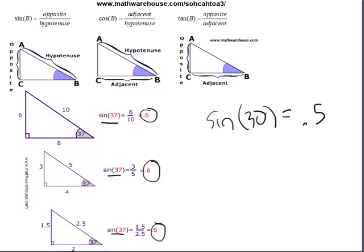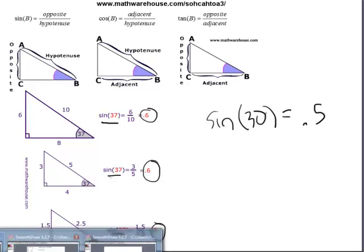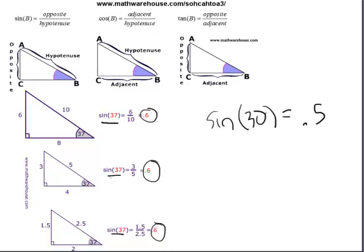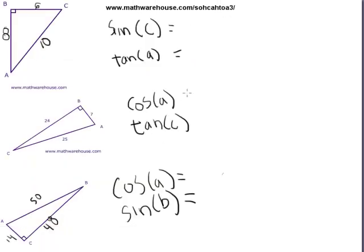So our goal today is to be able to look at a right triangle and to be able to write the ratio in question. For instance, let's try to write the sine of C.